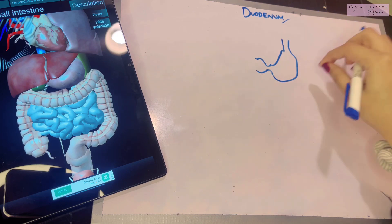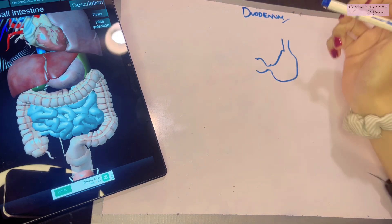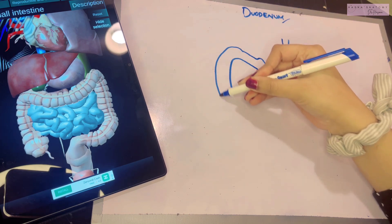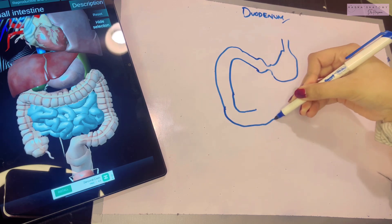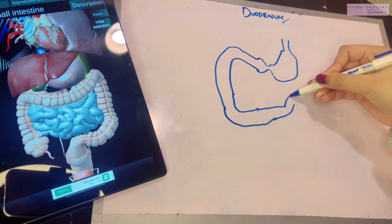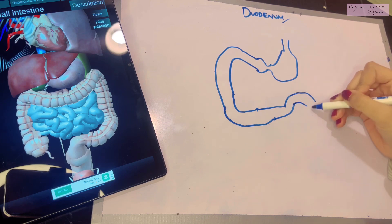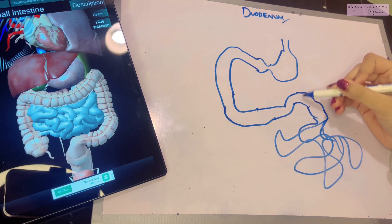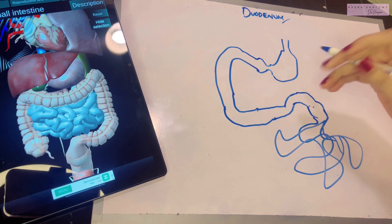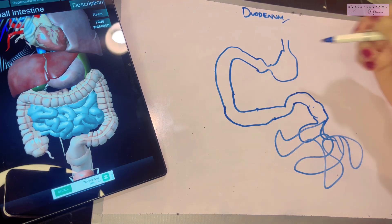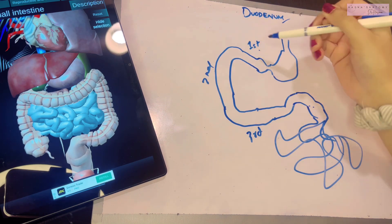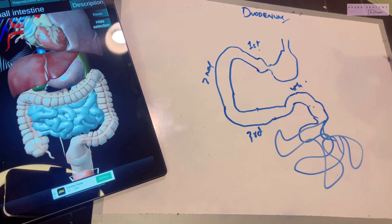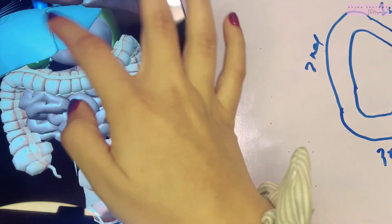The duodenum extends till the duodenojejunal flexure — the point where the duodenum meets the jejunum. It has four parts: the first part, a descending second part, a mostly horizontal third part, and a small fourth part, after which it joins the jejunum at the duodenojejunal flexure. Overall, the duodenum is divided into a superior part, descending part, horizontal part, and ascending part.